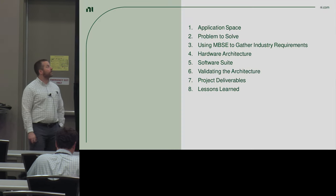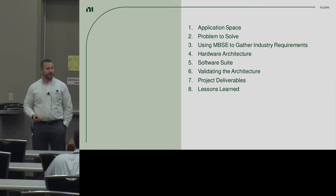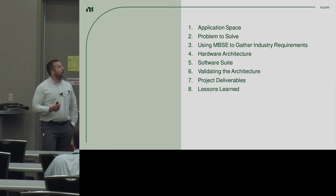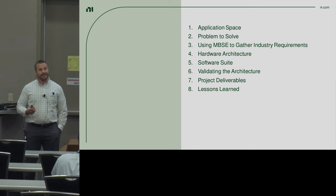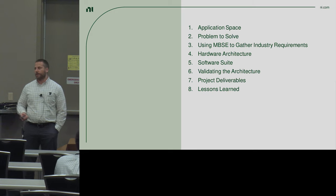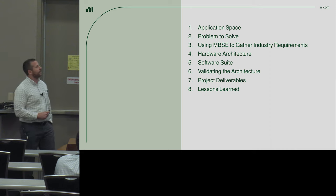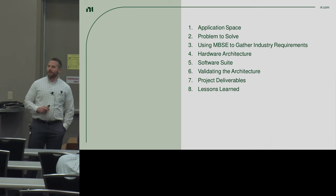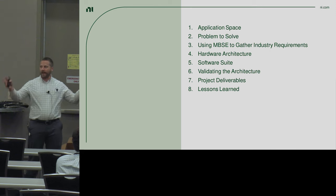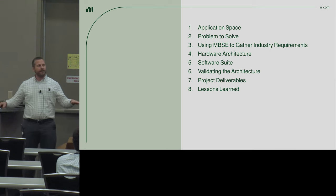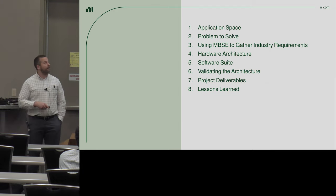Here's how we're going to break it down. First, we'll talk about the application space this was initially targeted for, the problem the architecture is intended to solve, and MBSE — model-based systems engineering — which is where the methodologies came from to design and implement this architecture. We'll also cover the hardware architecture, the software used, how we validated the architecture, and what deliverables came out. The system from this architecture is downstairs — it's the big two-rack, 2,000-channel strain gauge system with the airplane wing that's bending.